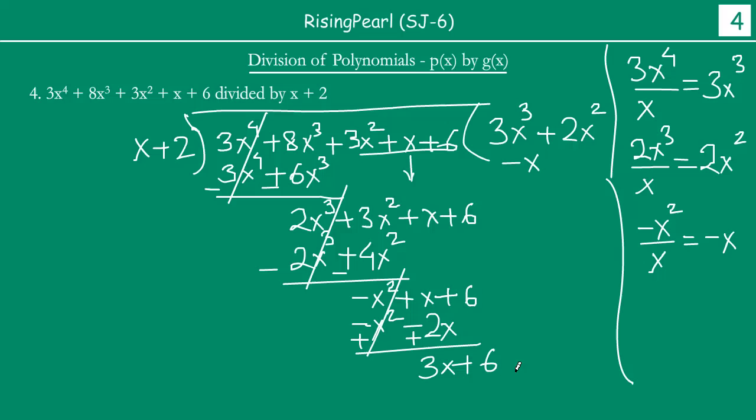So our new dividend is 3x. We divide this by x, and we get 3. So the final term is 3. And 3 times x is 3x, and 3 times 2 is 6. So we notice that actually this cancels out, and we get 0 as our remainder.